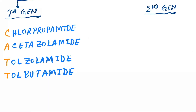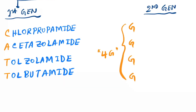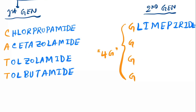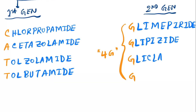Second generation drugs — remember 4G: glimepiride, glipizide, glycoside, gliclazide, and glibenclamide.